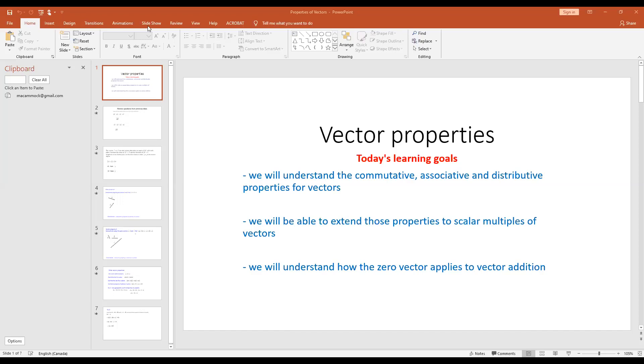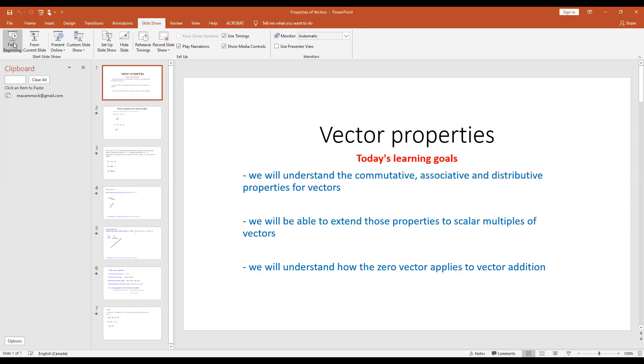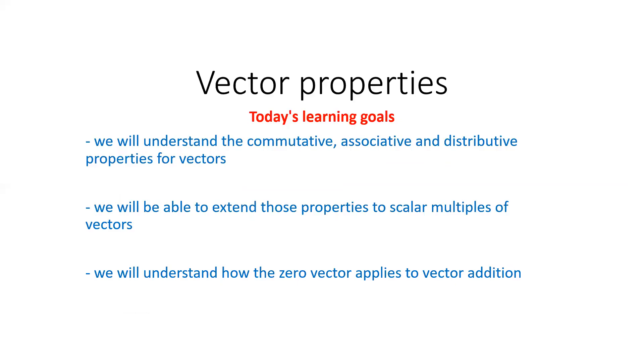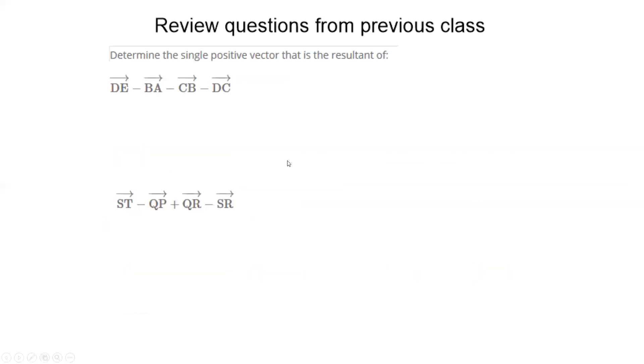Like I said, we're going to start by actually getting you to go over some stuff from the previous class. Here are the questions. I'm going to ask you now to do both of these two questions. It says determine the single positive vector that's the resultant of, and you can see them on the screen. I'm going to wait a few minutes to get everybody who is in the room to put their answers in, but privately, so nobody else can see your answers. Please go ahead now.